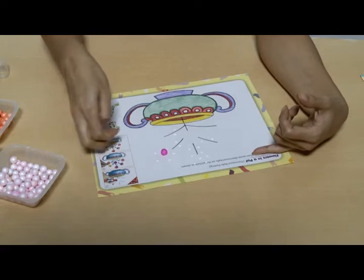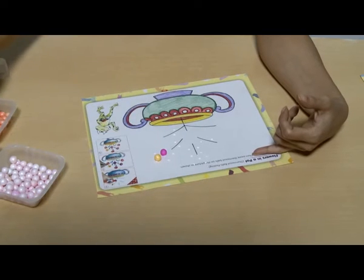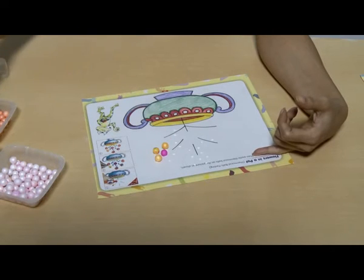Paste the Thermacol Balls one by one on the glued parts to make flowers and leaves as shown in the sample picture.